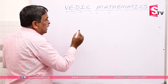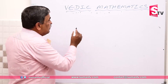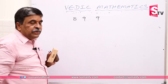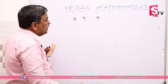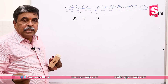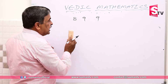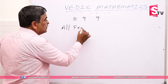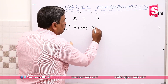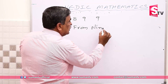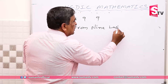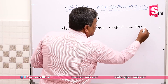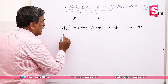For example, this number is 899. When we talk about the concept of subtraction — all from 9, last from 10. What is Nikhilam Sutra?